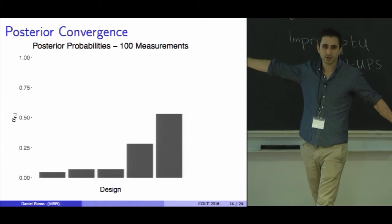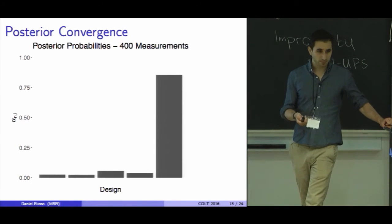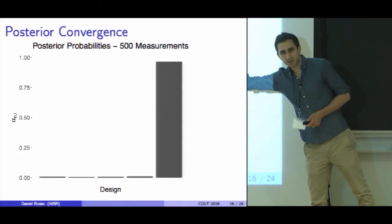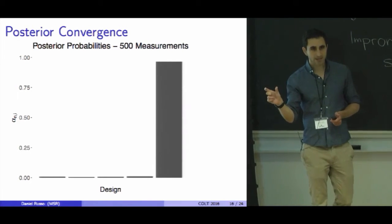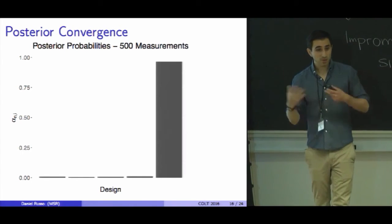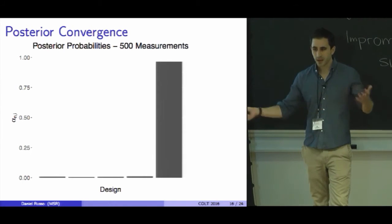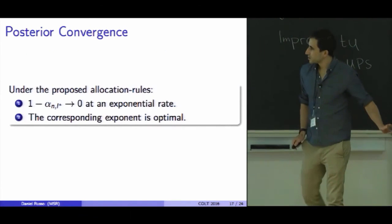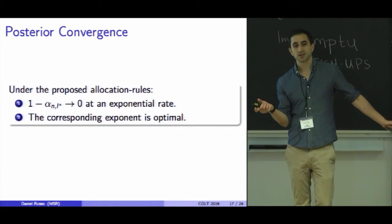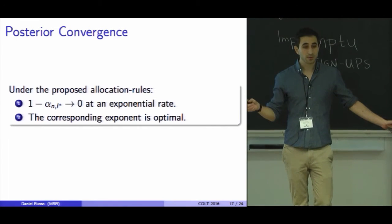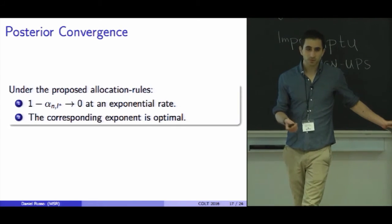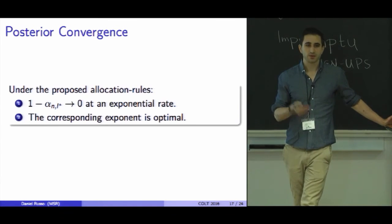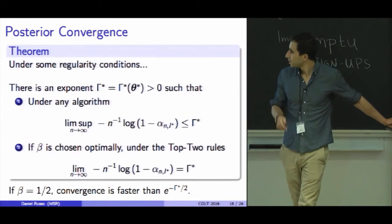After a hundred measurements, you can see you're starting to concentrate on the fifth one being the best. Four hundred, you're getting much more concentrated. And at five hundred, you're very concentrated. A natural question to ask is if you look at those other four designs and you look at the total mass assigned to those four, that's going to zero. Can you prove that it goes to zero? And can you say something about whether the rate at which it goes to zero is better than it would be under some other way of gathering information? That's exactly what this paper does. It shows that under the proposed rules, the total mass assigned to all of the suboptimal designs goes to zero, and it goes at an exponential rate. Then we look at the exponent and characterize what that is and say that that's the best it could be under any other allocation rule, in a formal sense.